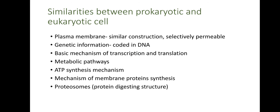Moving on to similarities between prokaryotic and eukaryotic cells — this is a little refreshing and new. In both prokaryotes and eukaryotes, the plasma membrane has similar construction — made up of phospholipids and is selectively permeable. Both have genetic information coded in DNA. Both have the basic mechanism of transcription and translation, which is very similar, following the same central dogma. Their basic metabolic pathways — respiration and ATP formation — are the same. The mechanism of membrane protein synthesis is also very similar, and lastly, proteasomes — the protein-digesting structures — are also similar in both.